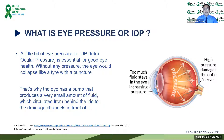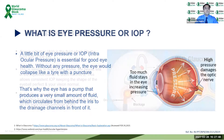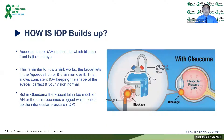A normal pressure is important to maintain the integrity of the globe, which is normally about 12 to 20 millimeters of mercury. Anything more than 22 is likely to damage the back of the eye or the optic nerve, resulting in glaucomatous damage. So how does the intraocular pressure build up inside the eye? We have an aqueous humor which fills the front part of the eye.